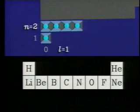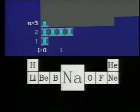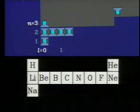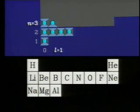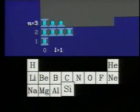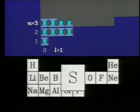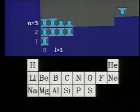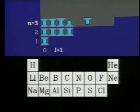According to the basic rules of atomic architecture, the n equals 3 shell will have room for 18 elements, starting with sodium, then magnesium, aluminum, silicon, phosphorus, sulfur, chlorine, and the noble gas argon.